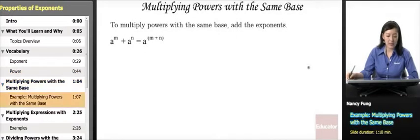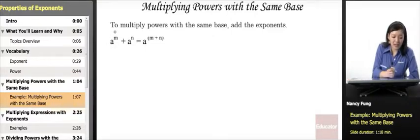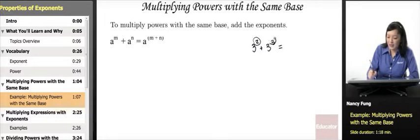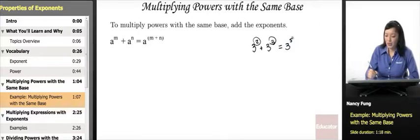Multiplying powers with the same base: to multiply powers with the same base, you add the exponents. So if you have a to the nth power times a to the nth power, it's going to be a to the n plus n. For example, if I had 3 squared times 3 cubed, I would add the exponents and it would be 3 to the 5th, since 2 plus 3 is 5.